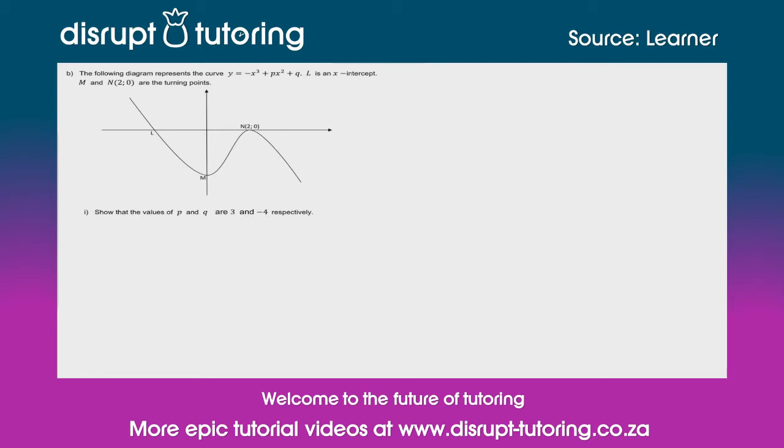Another very important piece of information that they include in this is that we have these turning points. We've got m over there, and we've got n over there. And what's very useful about n is they've given us the x-coordinate. So we know that at one of those points, one of the x points at the turning points is going to be an x equals 2.